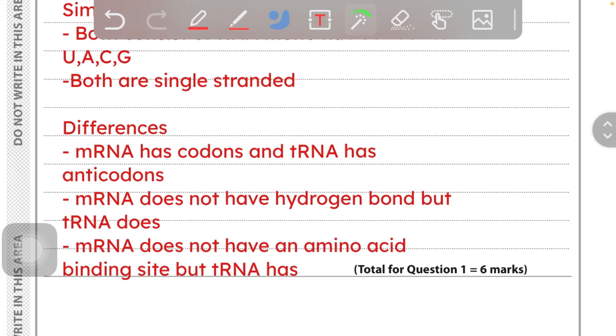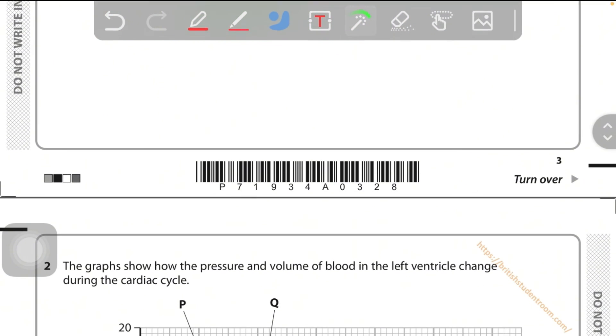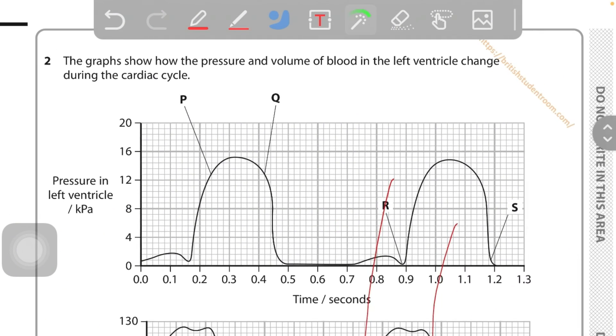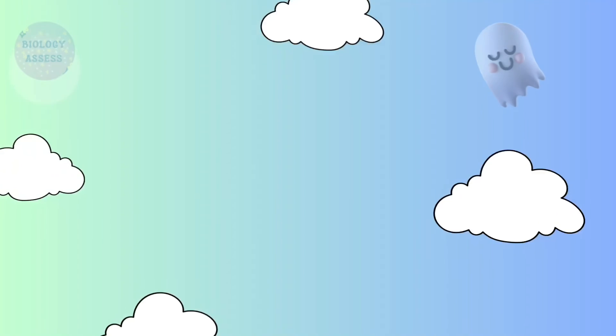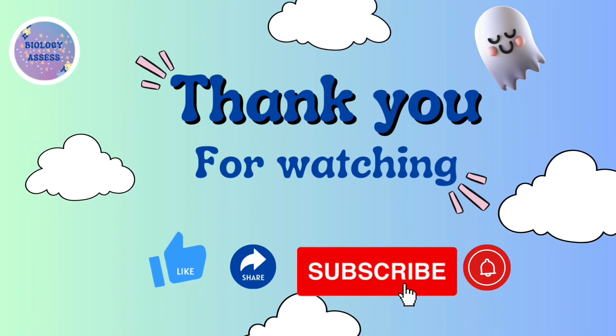And the differences: mRNA has codons and tRNA has anticodons. mRNA does not have hydrogen bonds but tRNA does. mRNA does not have an amino acid binding site but tRNA has. Yeah, it's a major one because tRNA binds with amino acid and then takes it along, right? It's a major one, you should remember this.